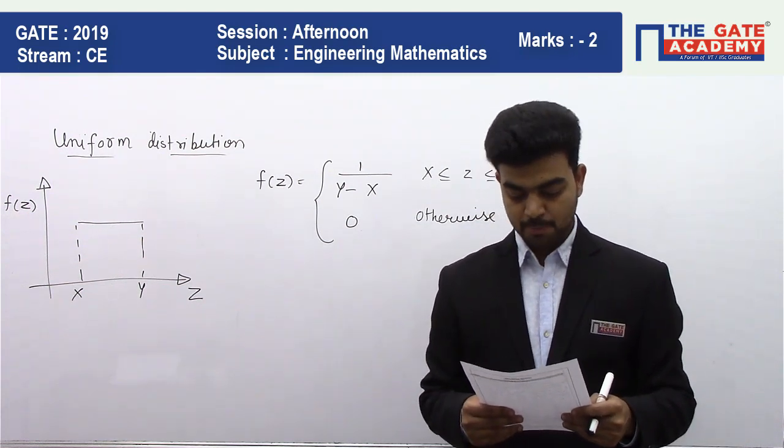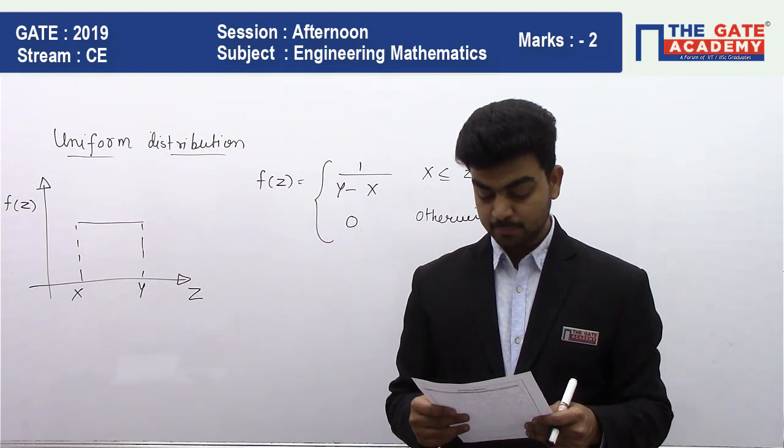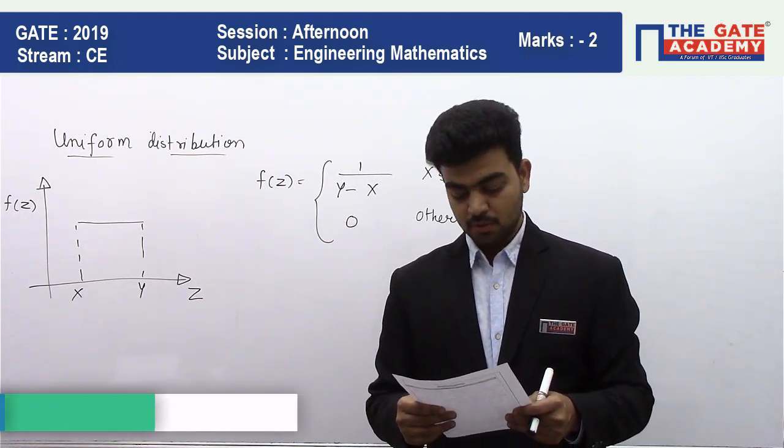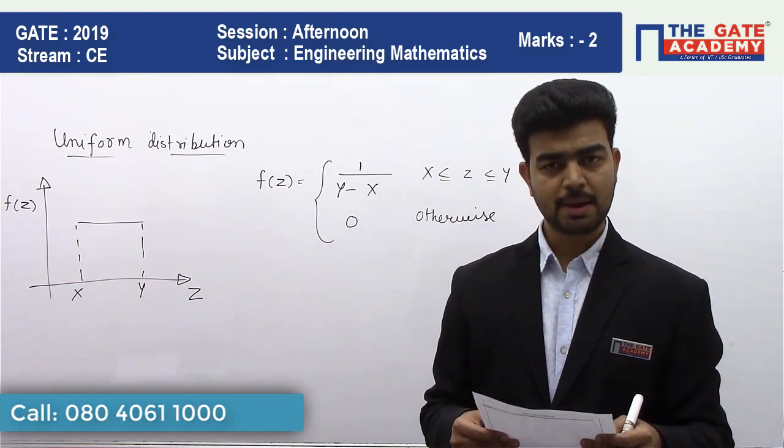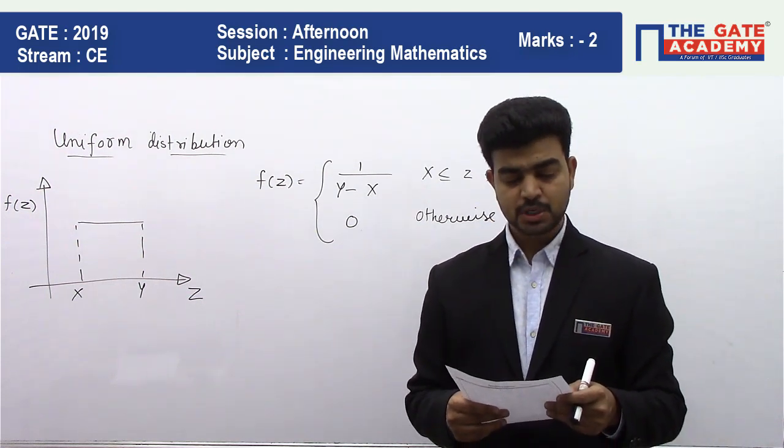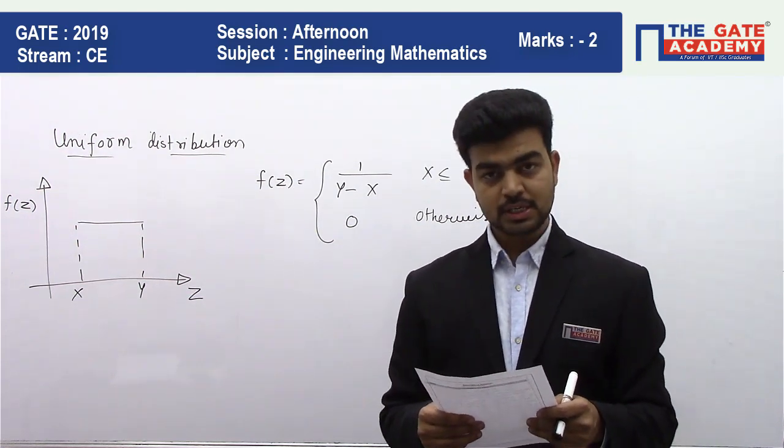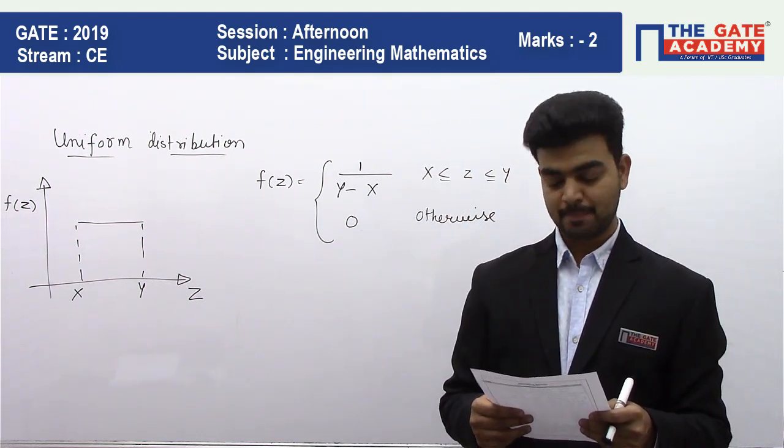So the question is: the probability density function of a continuous random variable distributed uniformly between X and Y, for Y greater than X, is? The options are given: first option is Y minus X, second option is X minus Y, third option is 1 by X minus Y, and fourth option is 1 by Y minus X.